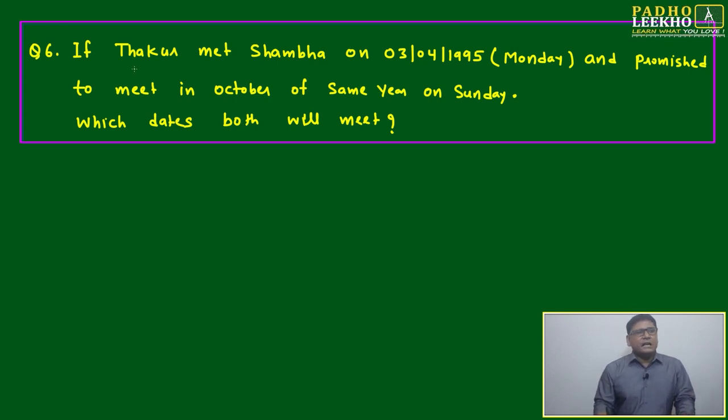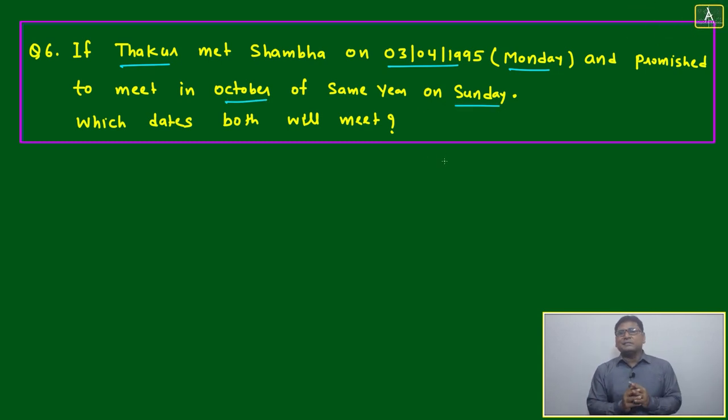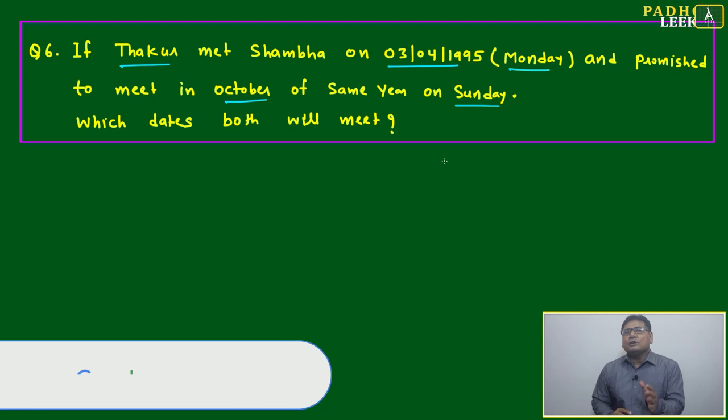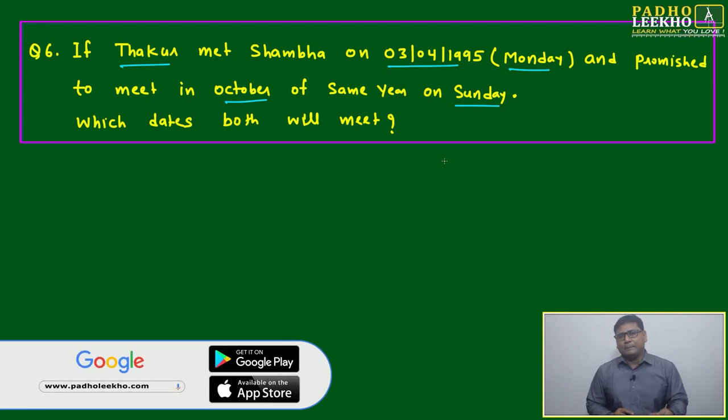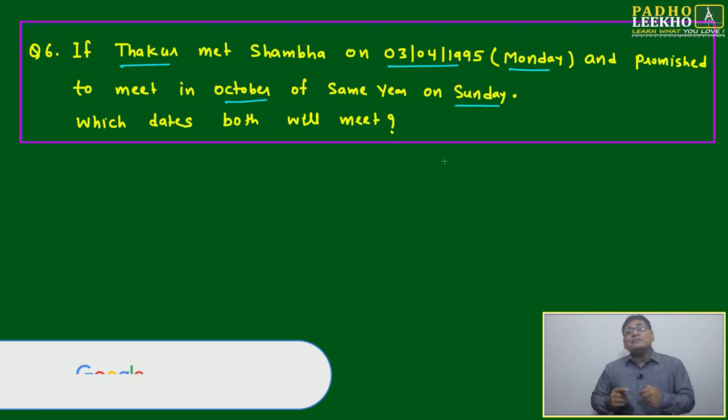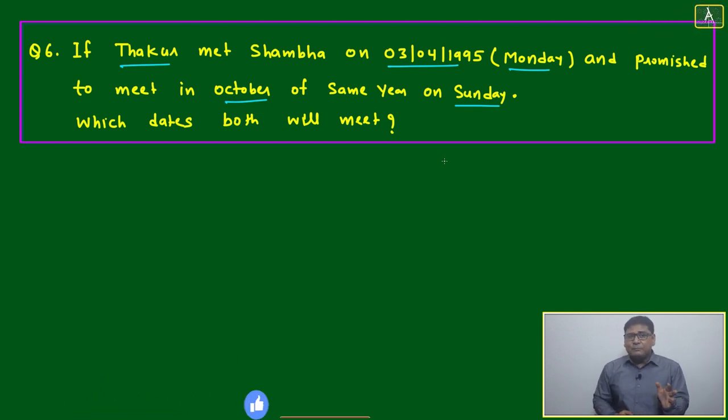If Thakur met Shambha on 3rd of April 1995, that was Monday, and promised to meet in October of the same year on Sunday. The situation is Thakur and Shambha are meeting - actually, their meeting we don't know - but one first meeting is happening on 3rd of April 1995. That was the Monday. And after the meeting, they promised we will meet again in October in the same year, but the October which will fall down on Sunday.